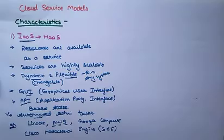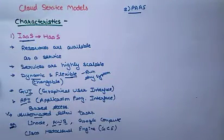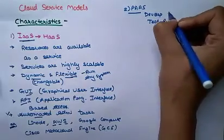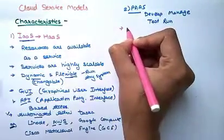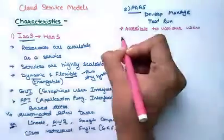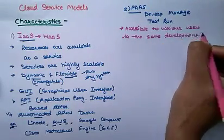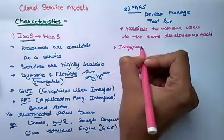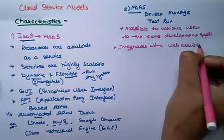The next service model is PaaS, that means Platform as a Service. It is created for programmers to develop, test, run, and manage applications. The first characteristic of PaaS is that it is accessible to various users via the same development applications. The next characteristic is that Platform as a Service helps with integration with web services and databases — web services being a front-end service and the database being a back-end service.